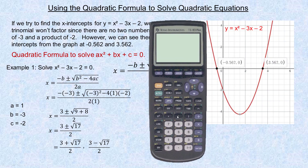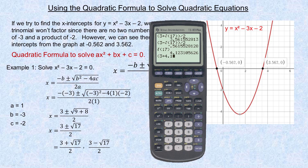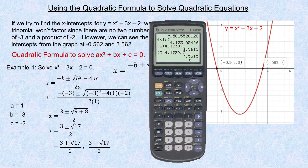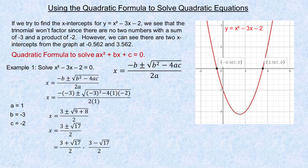Let's bring the calculator over. I would go 3 plus the square root of 17, close my bracket on the root, close my bracket on the top, divide by 2 — there's the 3.562. And then with the subtraction in the middle, there's the negative 0.562. If you don't have a calculator that does this, the square root of 17 is about 4.123. So go 3 plus 4.123 divided by 2, giving 3.562. And 3 minus 4.123 divided by 2 gives negative 0.562. That's how you evaluate and convert these to decimals.